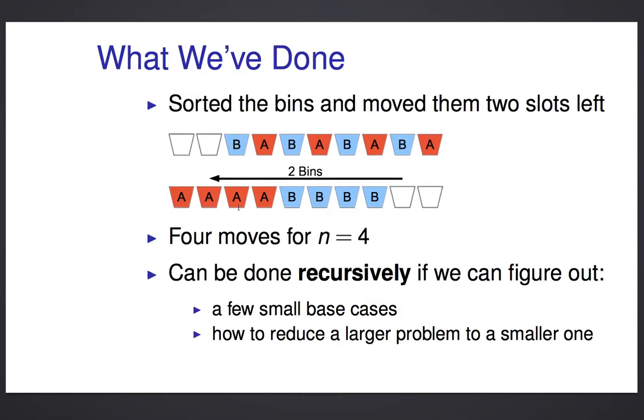First of all, we notice that we can sort them, and as they sort, they move two spaces to the left. So a side effect of this sequence of operations is to slide them down a little bit, and we notice it took, to sort four of each type of bin, exactly four moves.